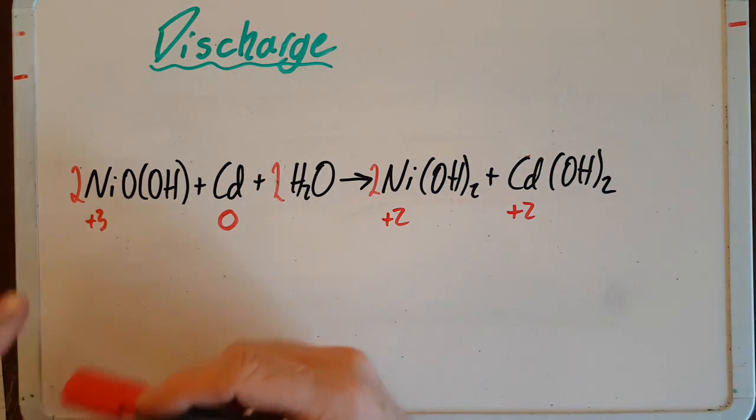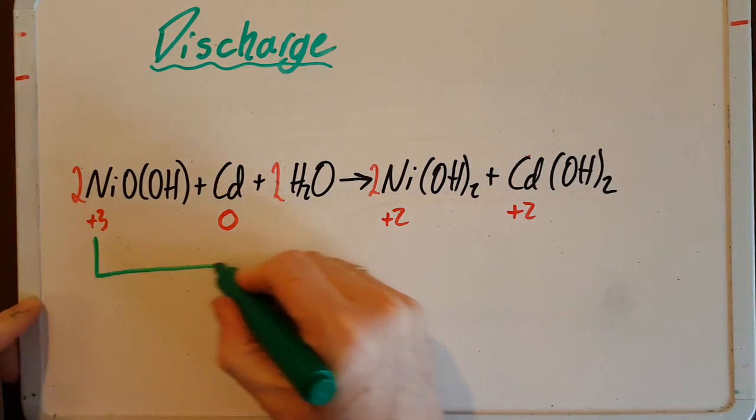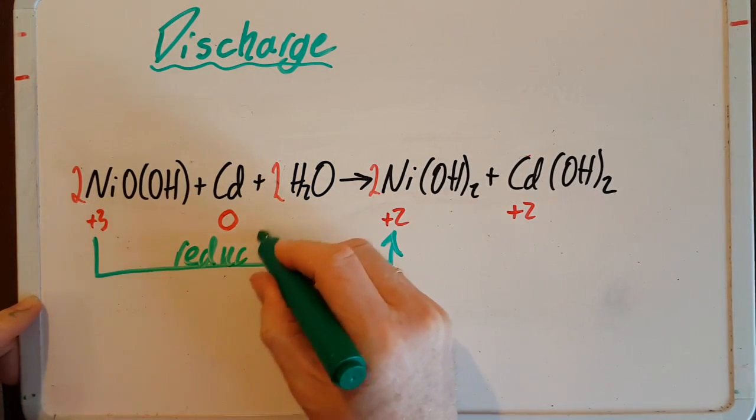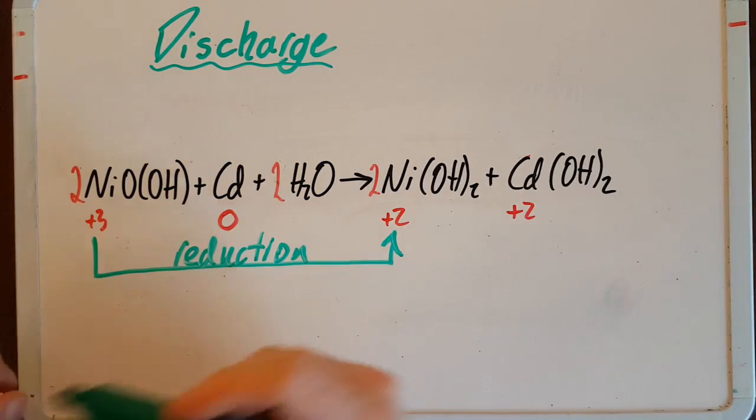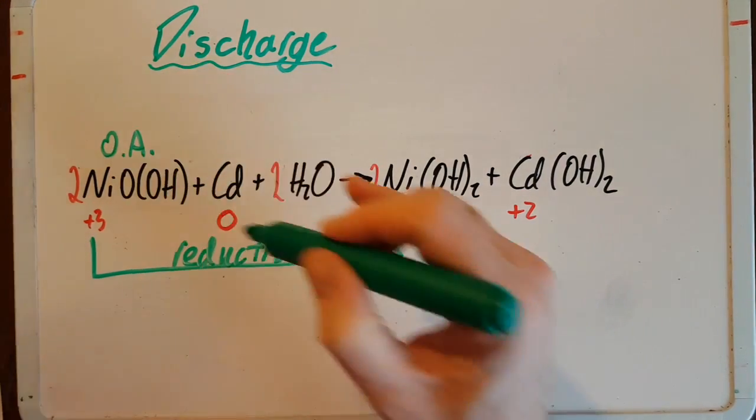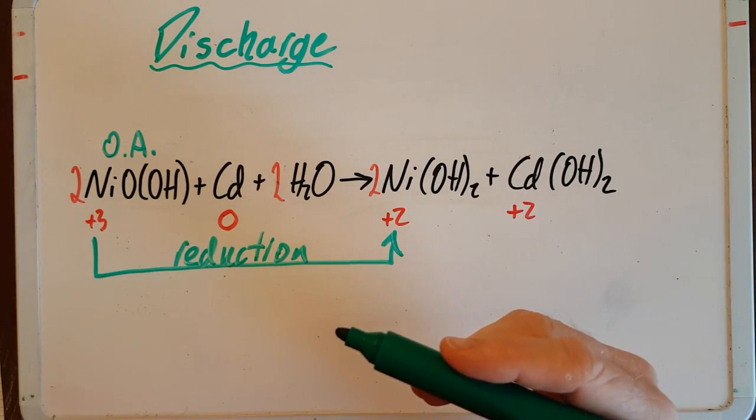Oxidation and reduction. Nickel is going from plus three oxidation state to plus two. That's reduction. Which means that this must be the oxidizing agent. An oxidizing agent is itself reduced. Little song for you there.